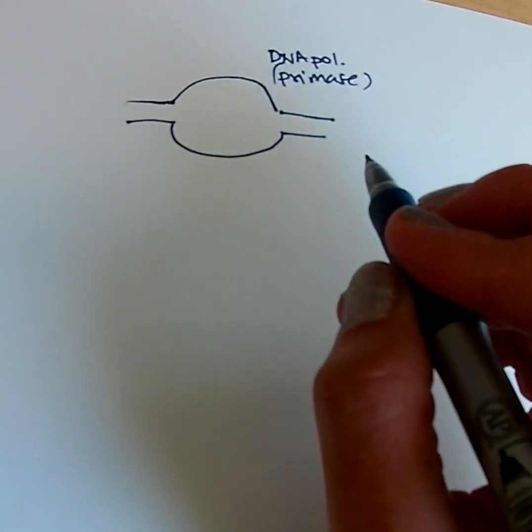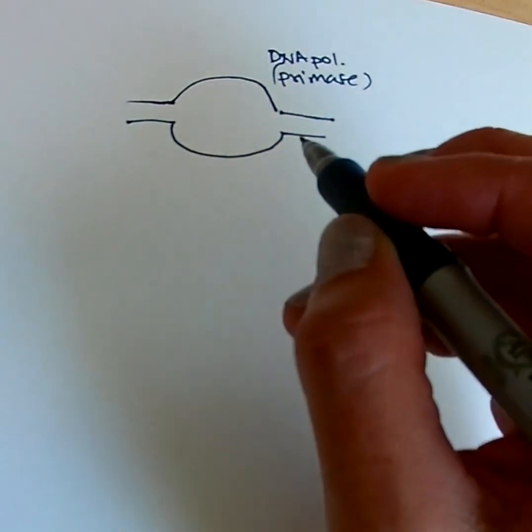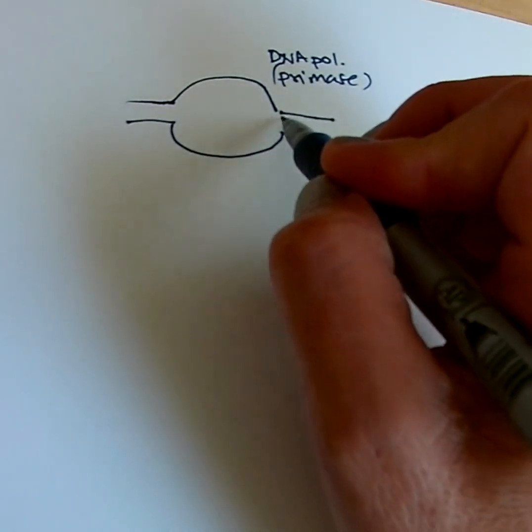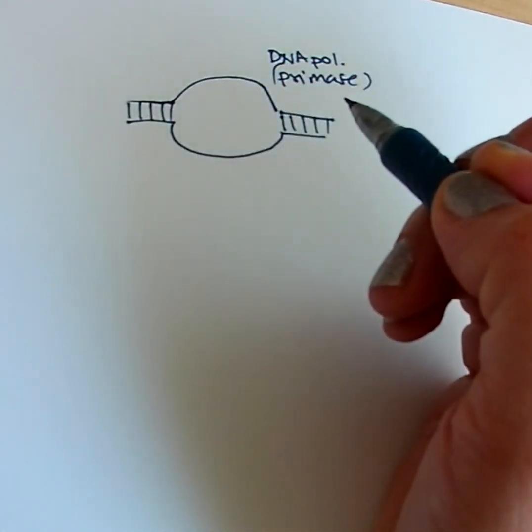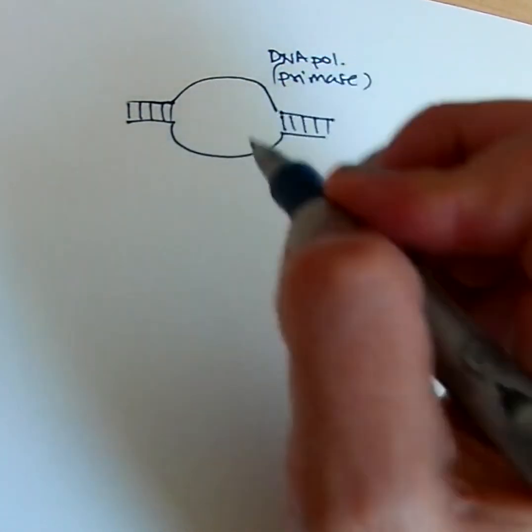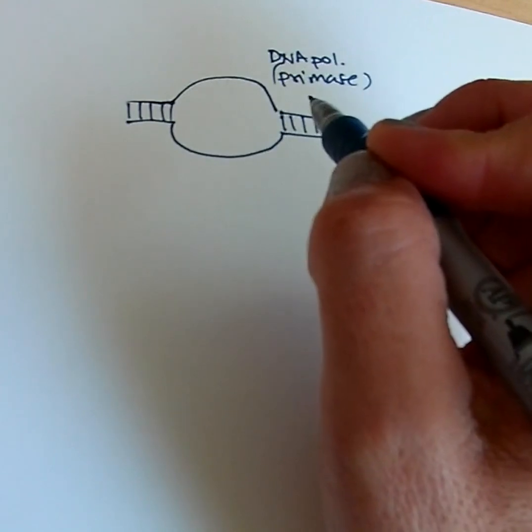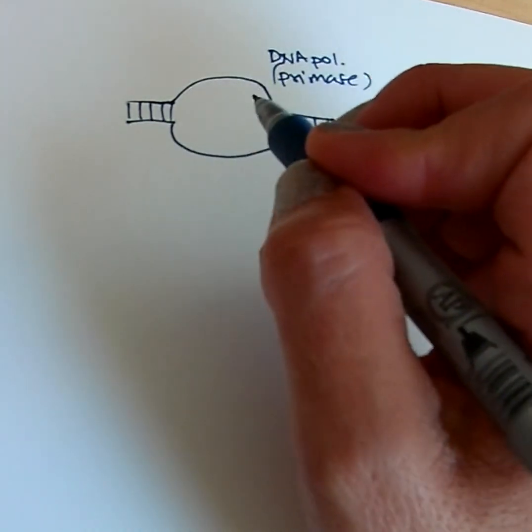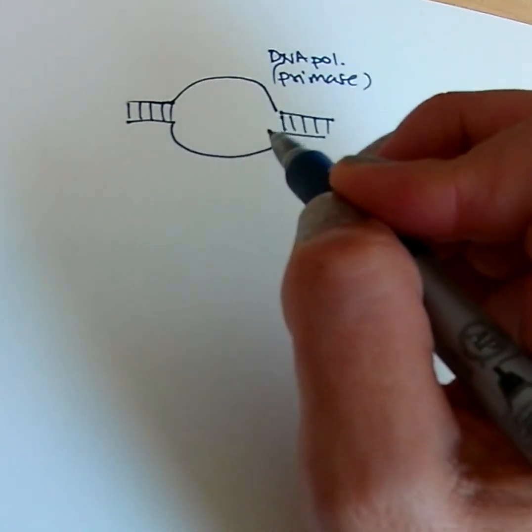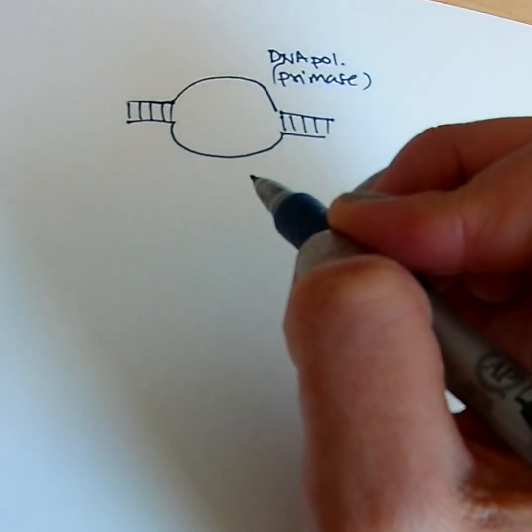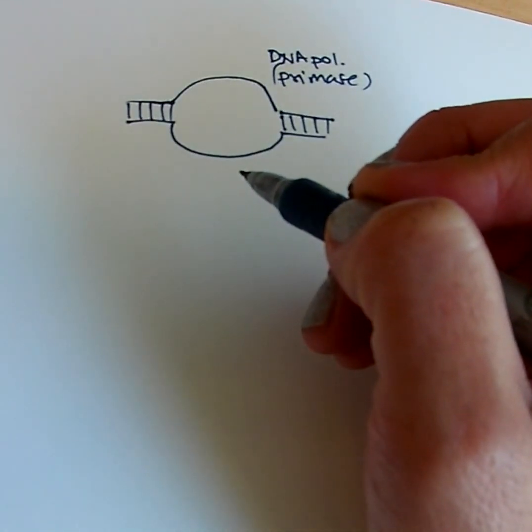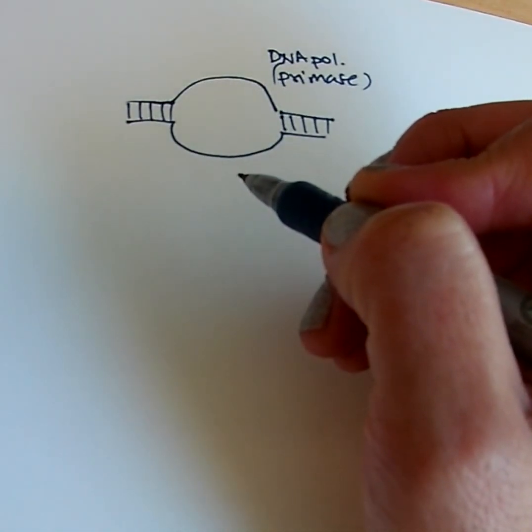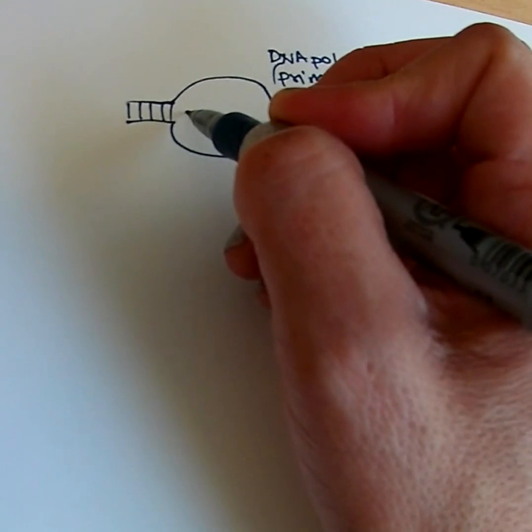So here we've got hydrogen-bound together nucleotides, and here we have non-hydrogen-bound together nucleotides. Just a reminder, the helicase was unwinding these from each other, it's melting the two strands away from each other, and the single-stranded binding protein is stabilizing that.